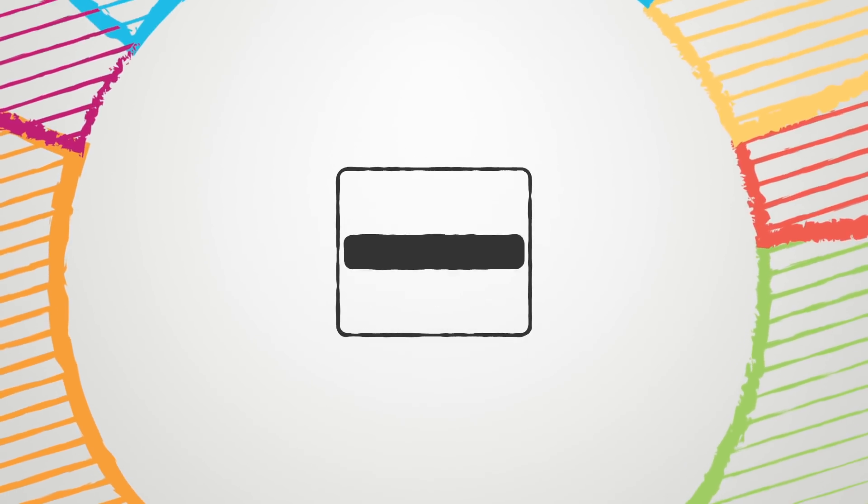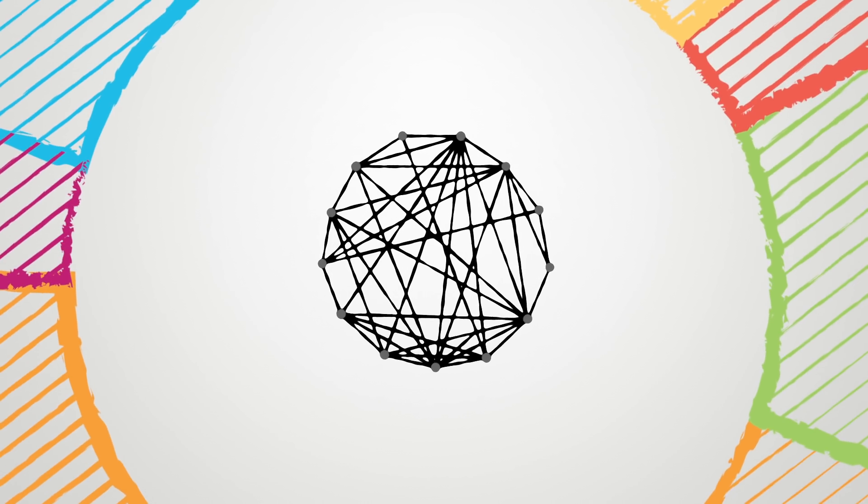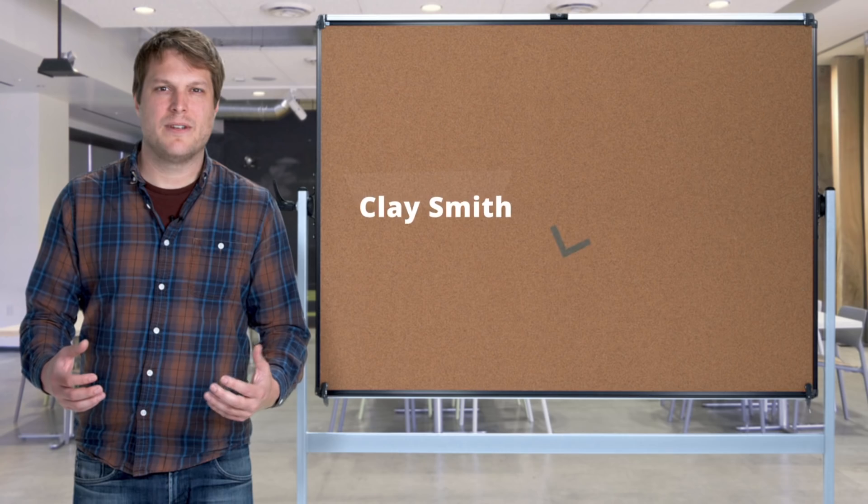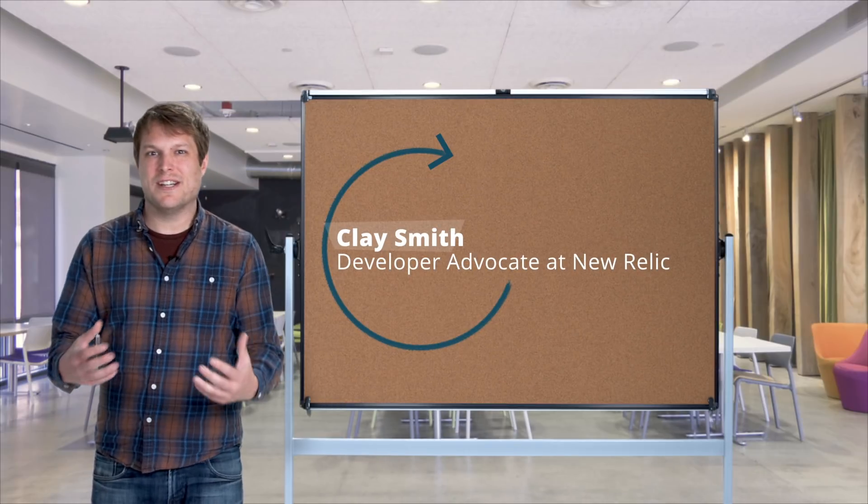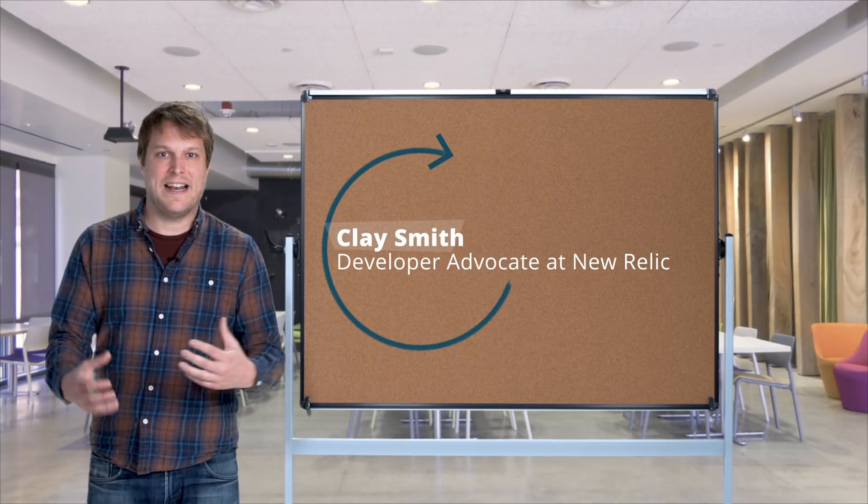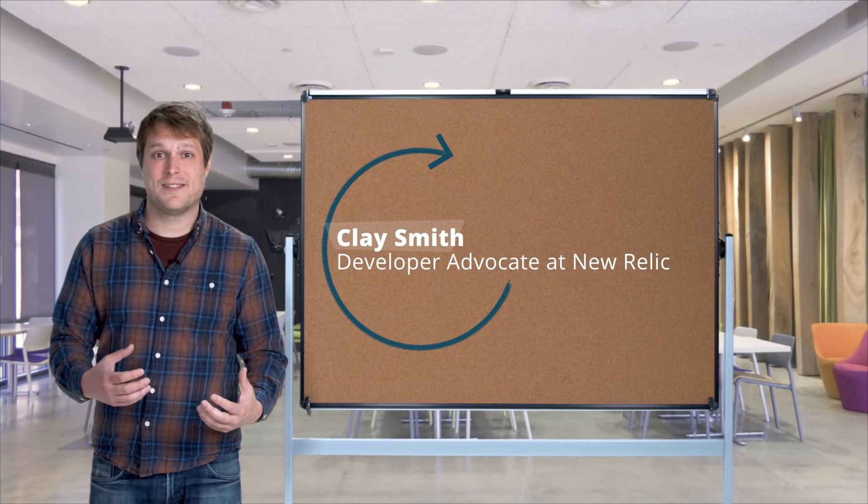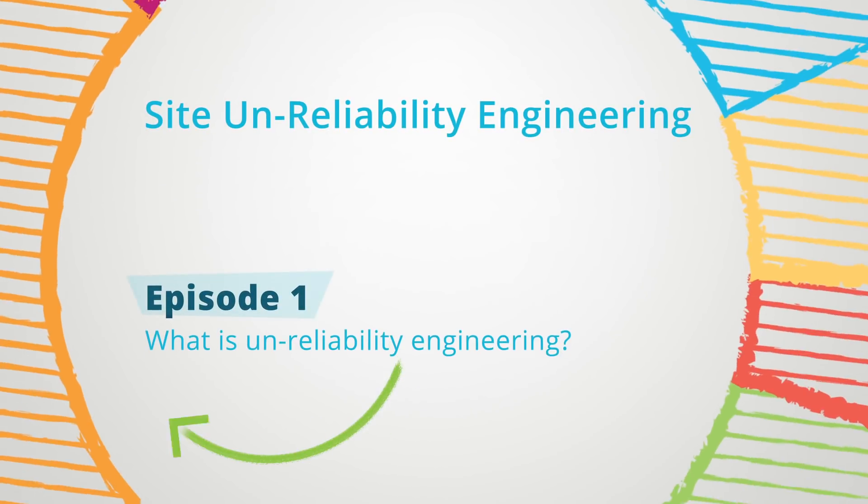When it comes to building complex software, only one thing is certain. Some sort of failure is going to occur. In this series, we're going to explore exactly that question. When dreaded failure does occur, how do you act quickly and actually fix these problems in the first place? This is Site Unreliability Engineering.